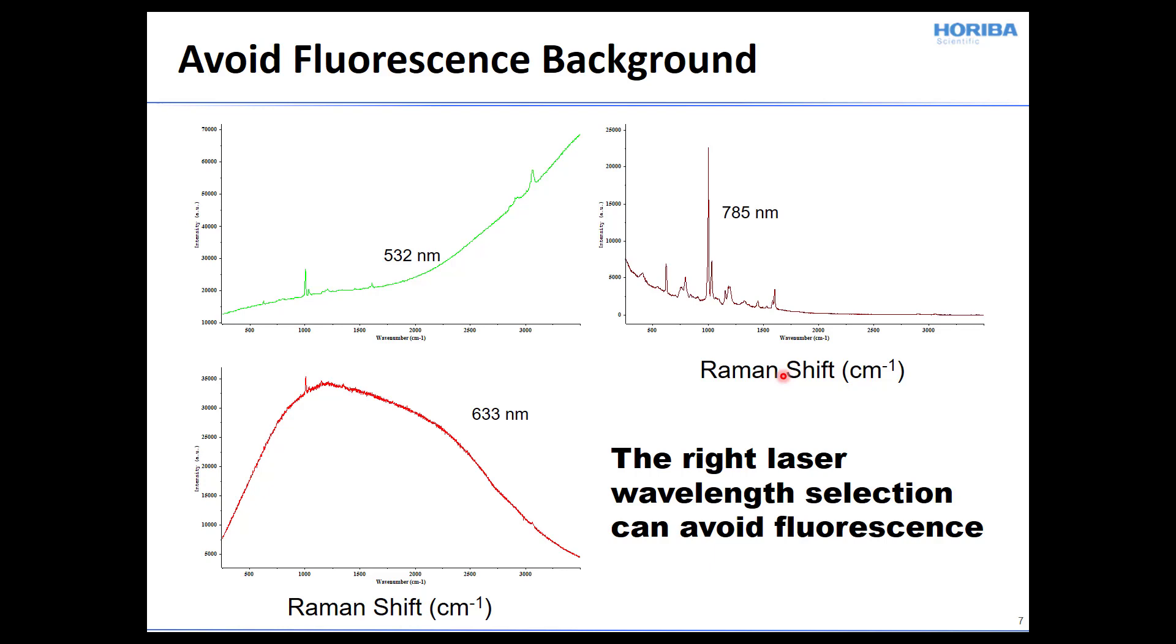So if we plot these same spectra separately now, I think you can see clearly, if we excite at 532, we're just on the onset of the fluorescence, you can still see the Raman bands there. And you could certainly, using the software, do a background subtraction. However, once you get to 633 nanometer excitation, even a background subtraction won't help because the bands themselves are lost in the noise. Whereas at 785 nanometer excitation, we're removed from the fluorescence altogether, and so we get a very good signal to noise in our Raman spectrum.